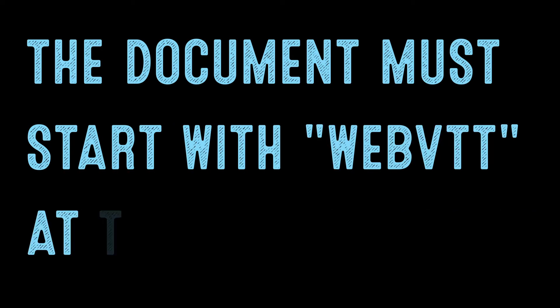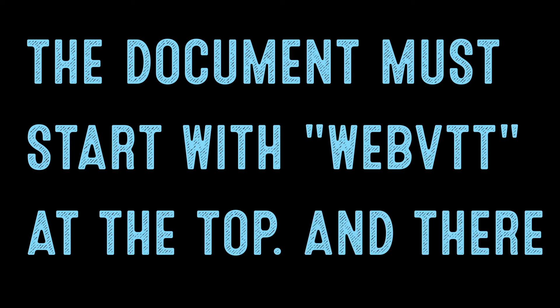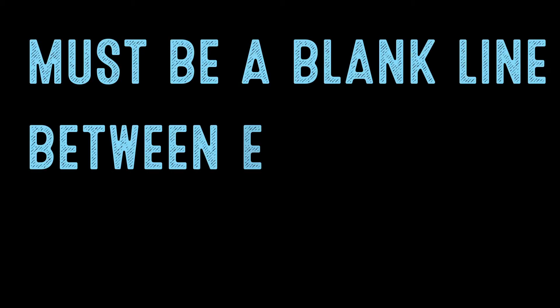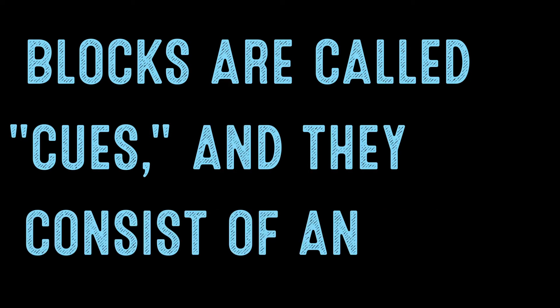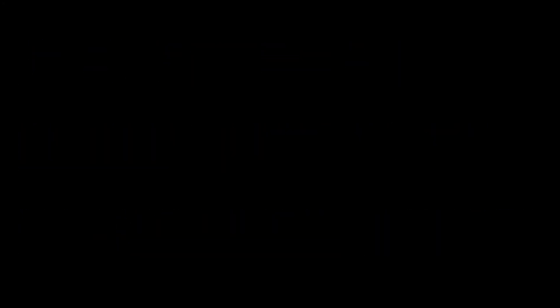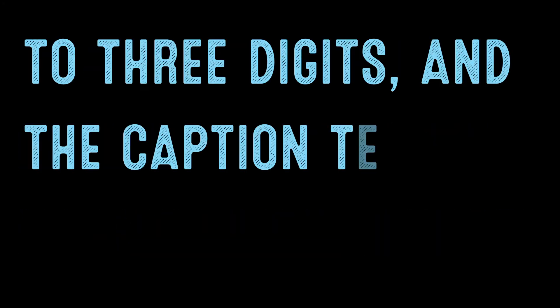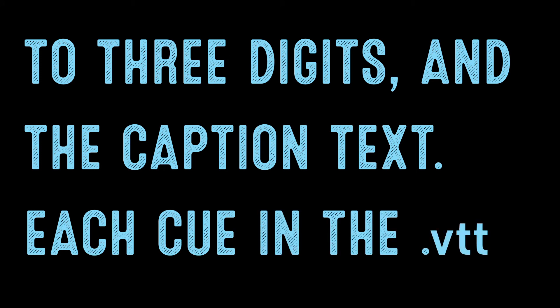The document will start with WebVTT at the top and there must be a blank line between each text block. These text blocks are called cues and they consist of an optional cue identifier, a timestamp written out in a particular format down to the milliseconds, rounded to three digits, and the caption text.